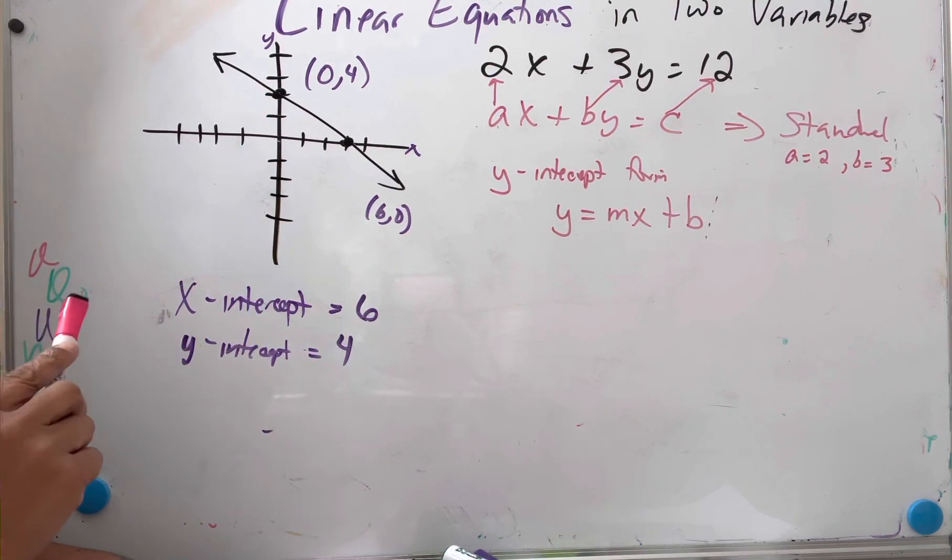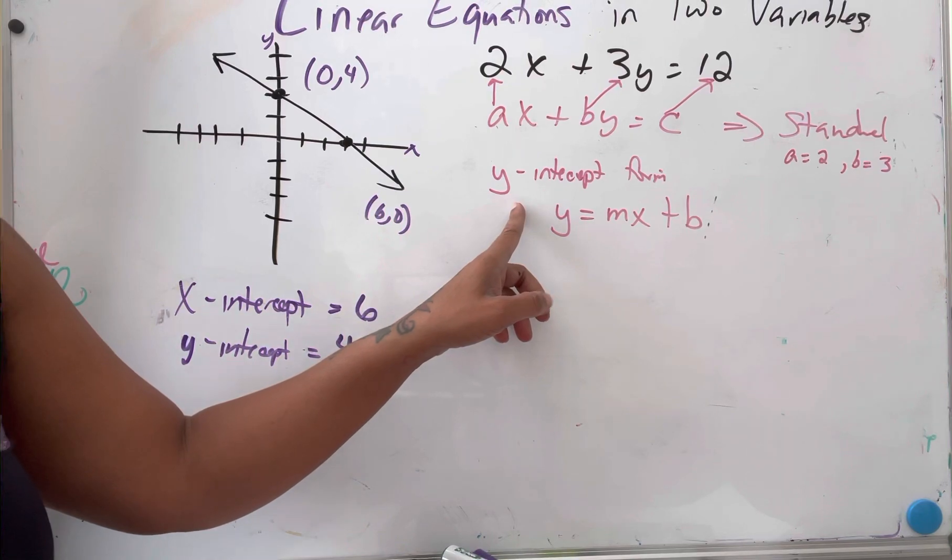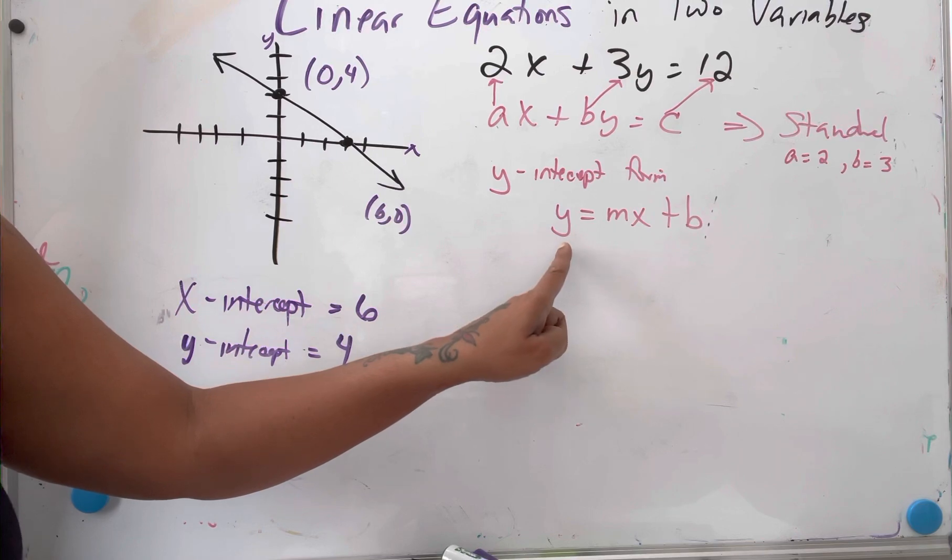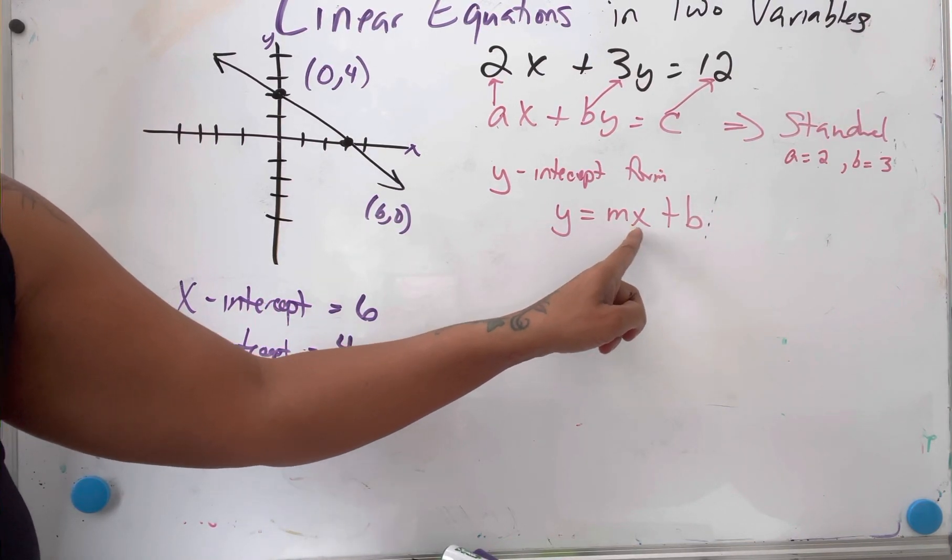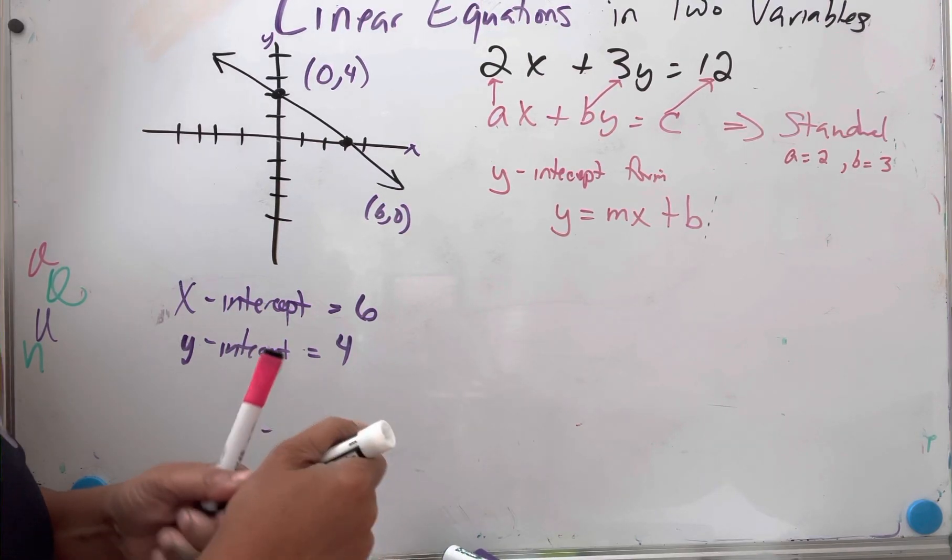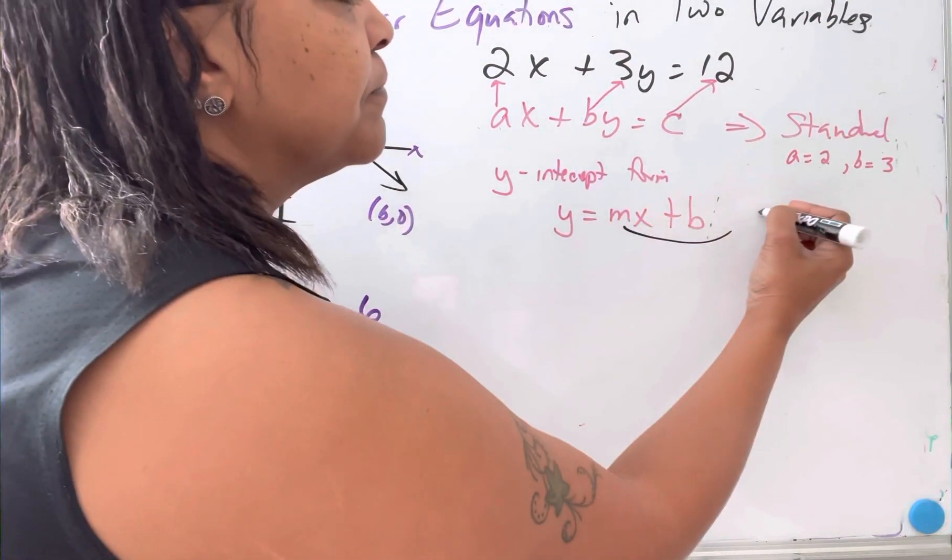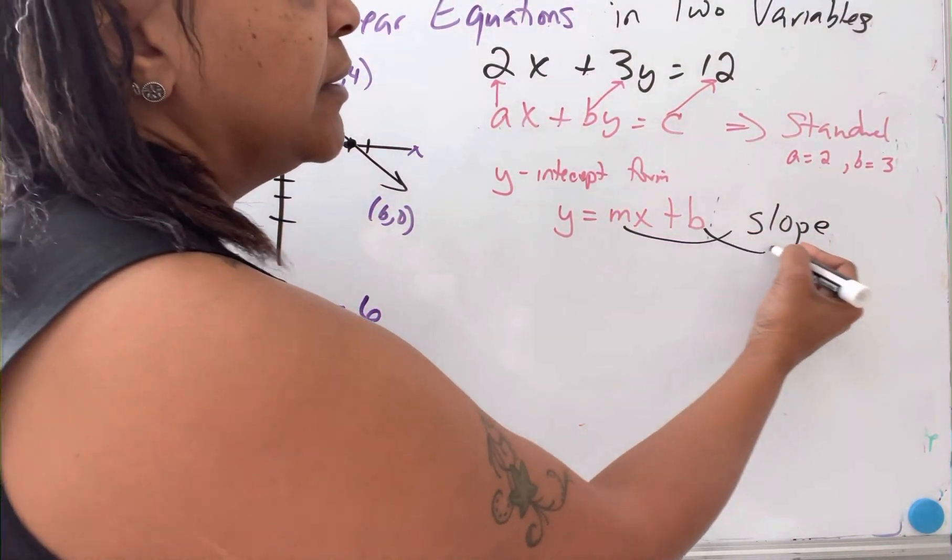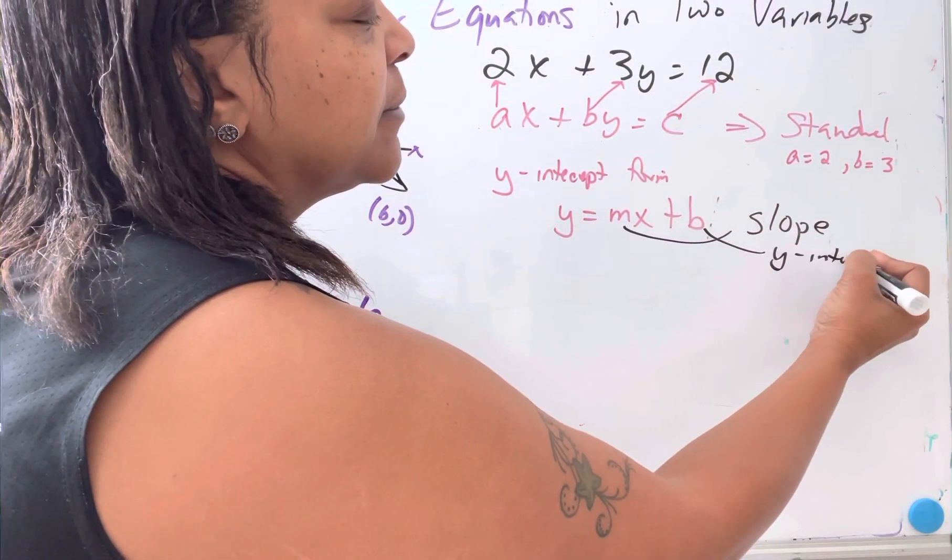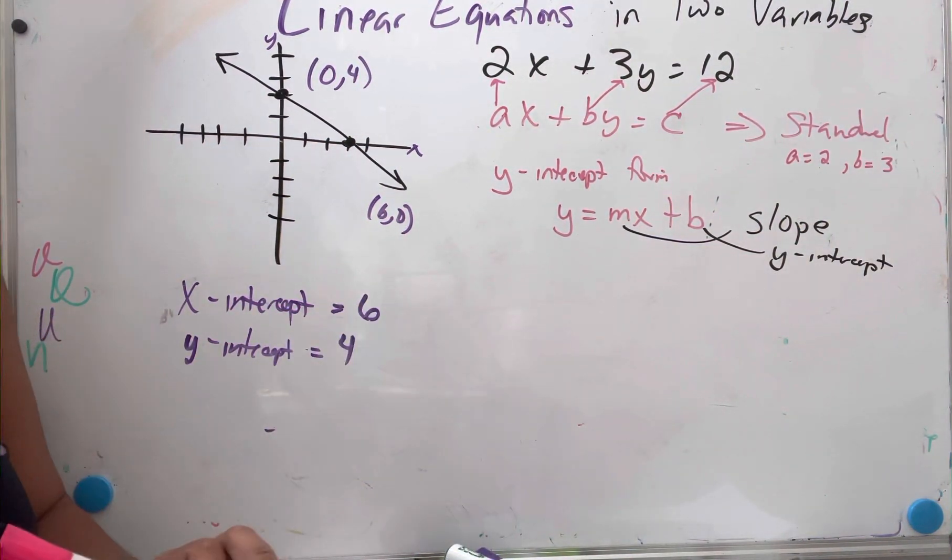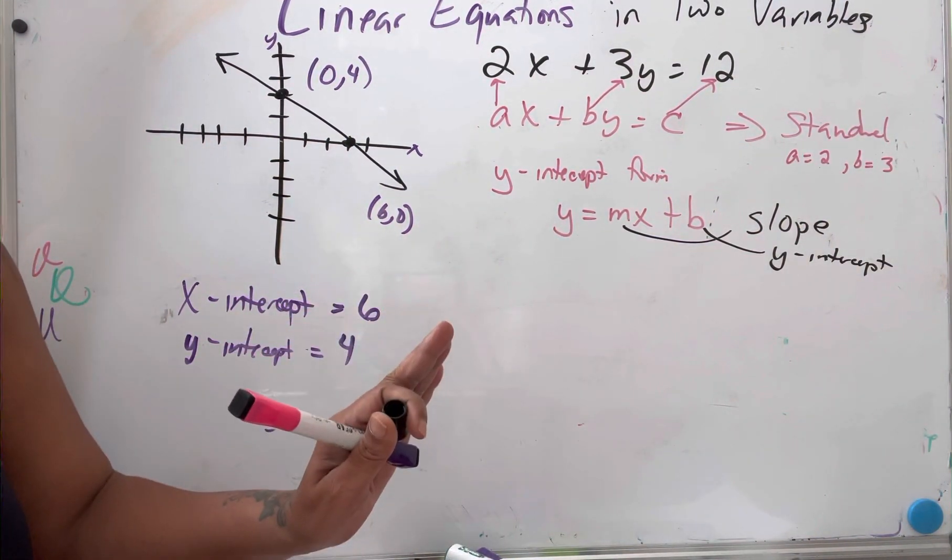That brings me to y-intercept form of a line. The standard form for y-intercept form is y equals mx plus b, where m is our slope and b is our y-intercept.